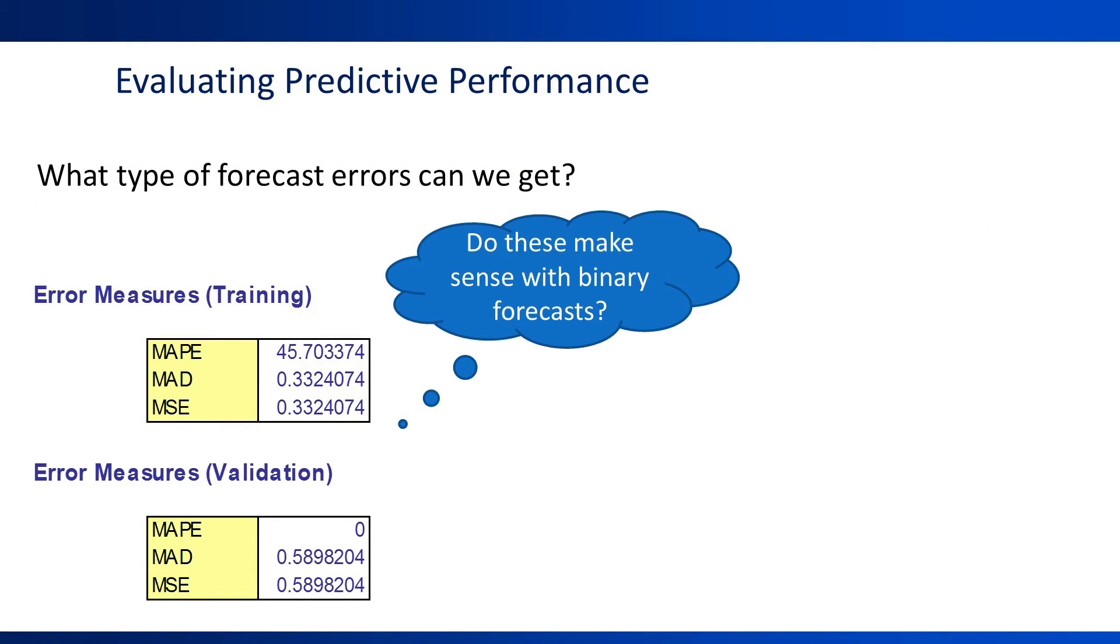In numerical forecasting, we used metrics such as MAPE, MAD, and MSE. Can we use these same metrics to summarize binary forecast errors? To answer this, let's consider what the forecast errors look like in binary forecasting.